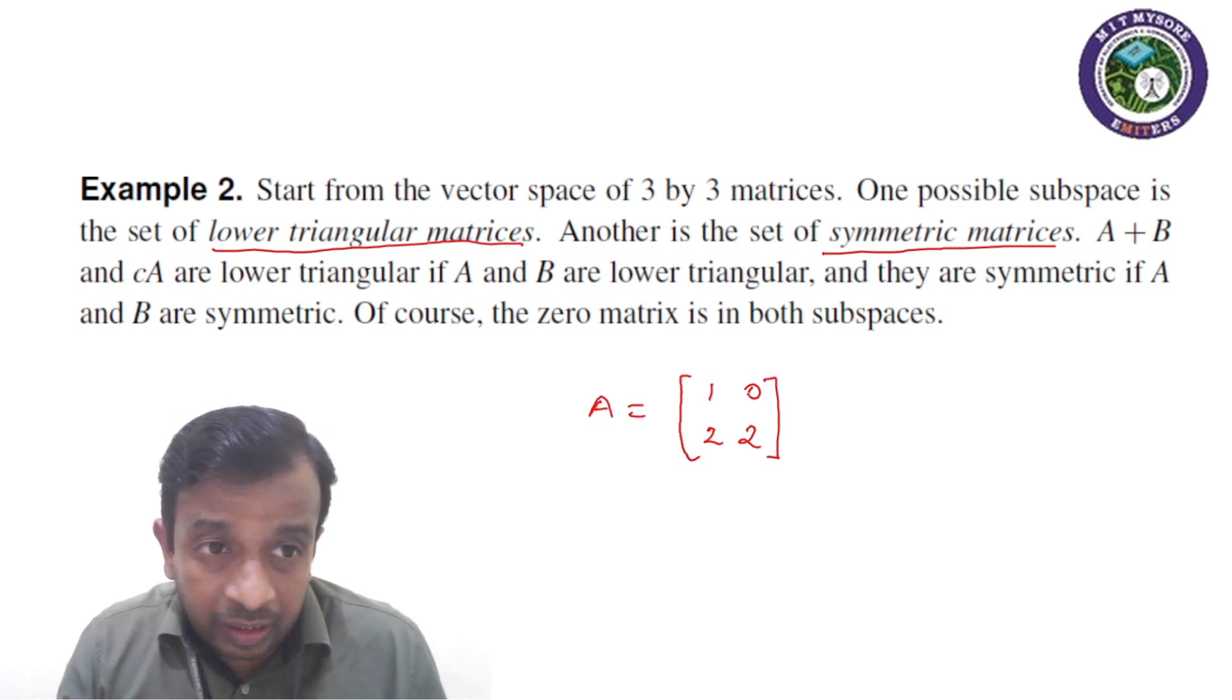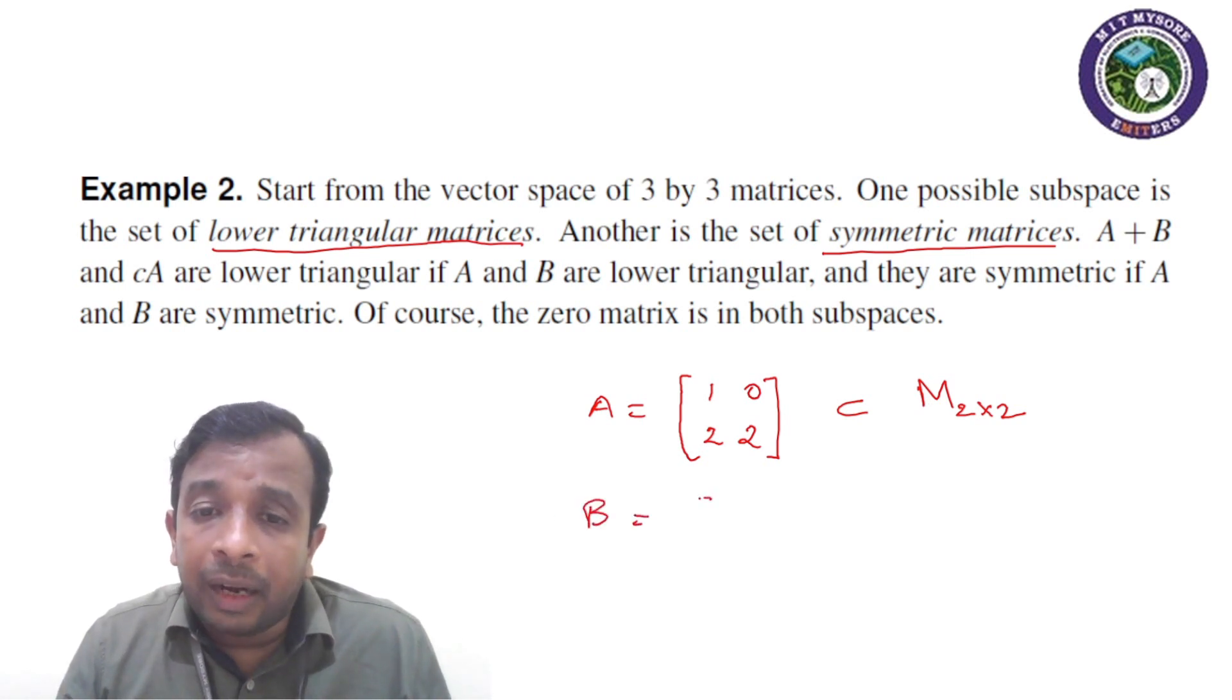Then we call it as a lower triangular matrix. The set of lower triangular matrix is a subset of M2 cross 2. It is a non-empty subset of 2 cross 2. So if I consider two lower triangular matrices...